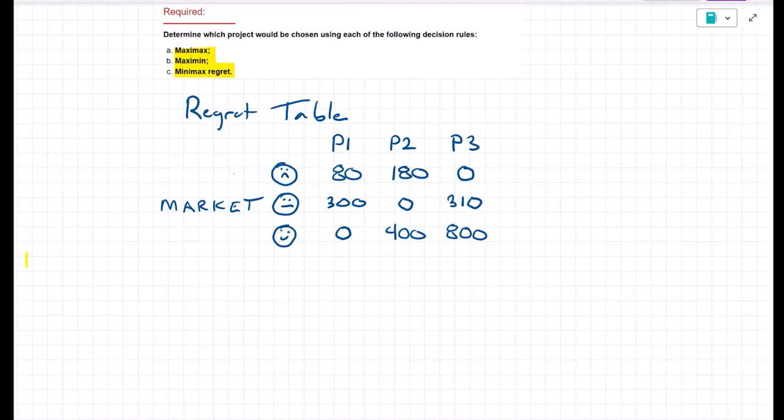After we've completed our regret table, next, we identify the maximum regret under each option. So now we look at each project. And under project three, there's a chance we'll have an $800 regret. Under project one, $300.